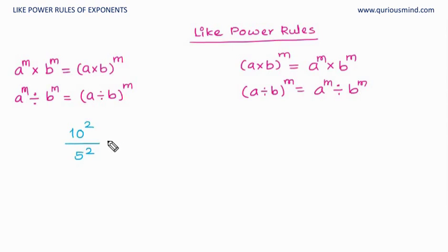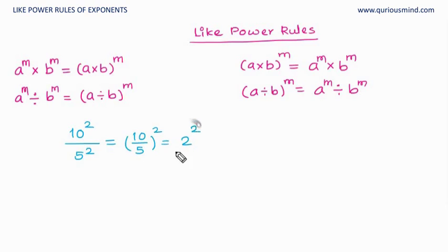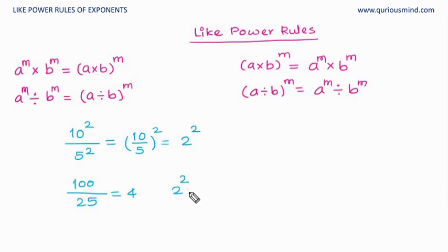Let's do a problem: 10 raised to 2 divided by 5 raised to 2. The power is the same, so in the answer the power will remain the same. Since we are dividing, the base will get divided: (10 ÷ 5) raised to 2 = 2 raised to 2. To verify: 10² = 100, 5² = 25, and 100 ÷ 25 = 4. Also, 2² = 2 × 2 = 4. So this is correct.